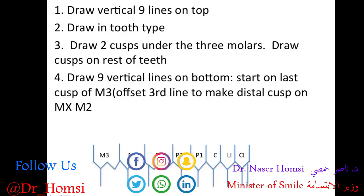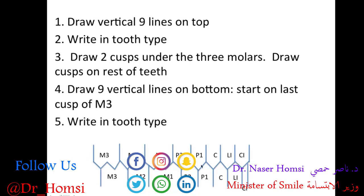We're going to draw the rest of the lines and fill in the tooth type on the lower arch: third molar, second molar, and here's the first molar. Remember, we set that line off to the distal just a little bit, and that helps us see there's a distal cusp in there.